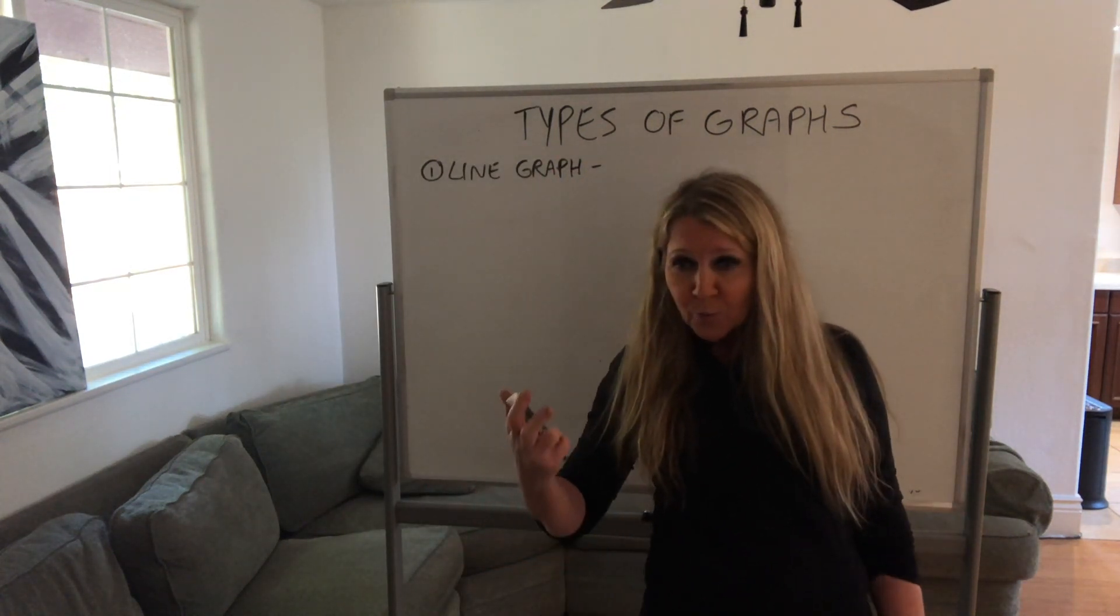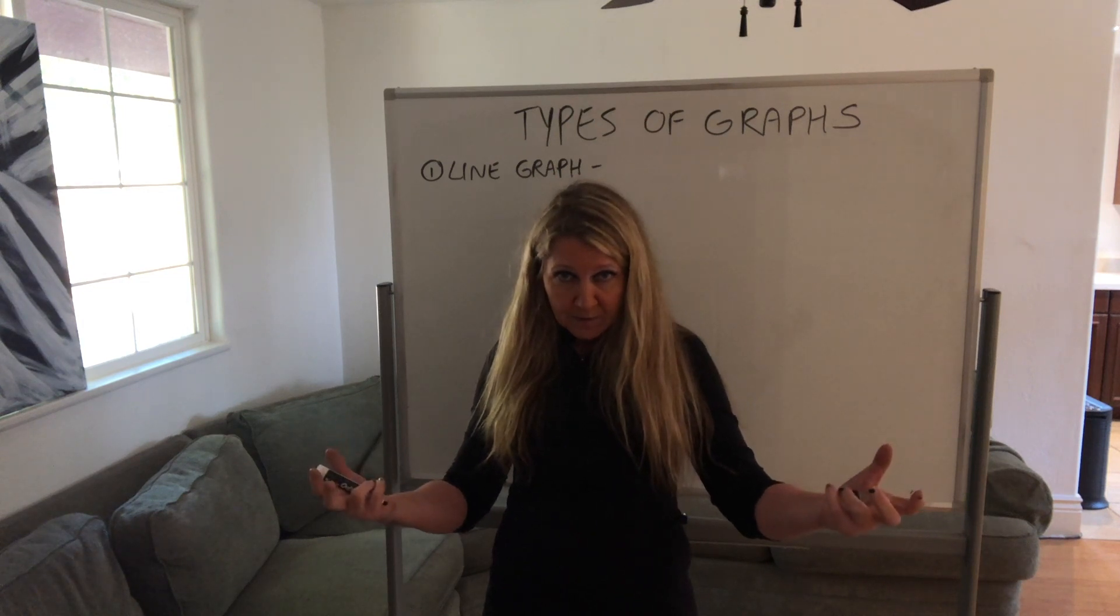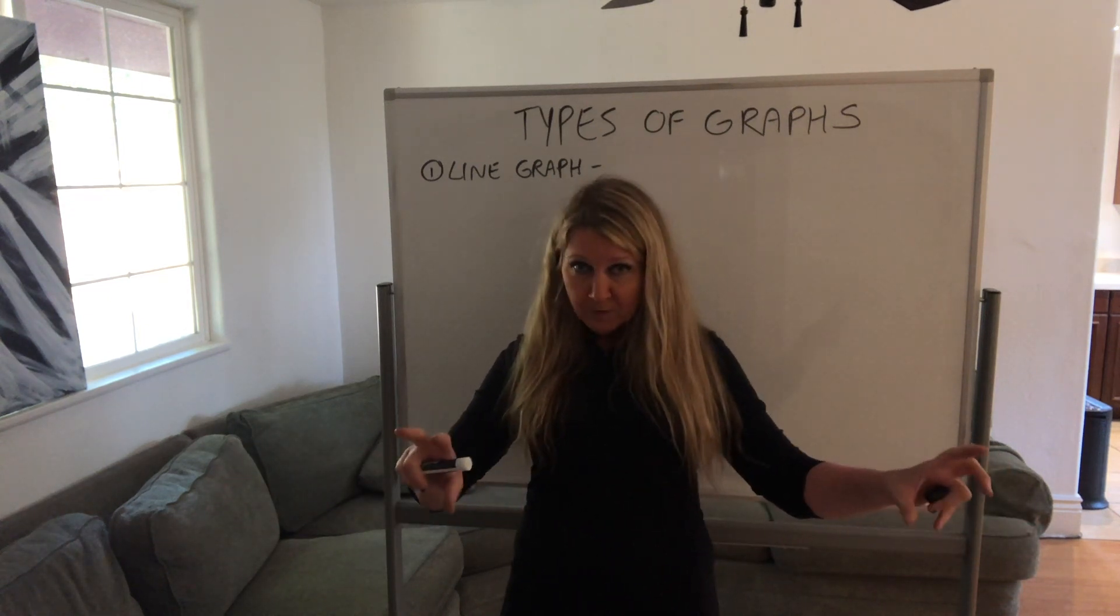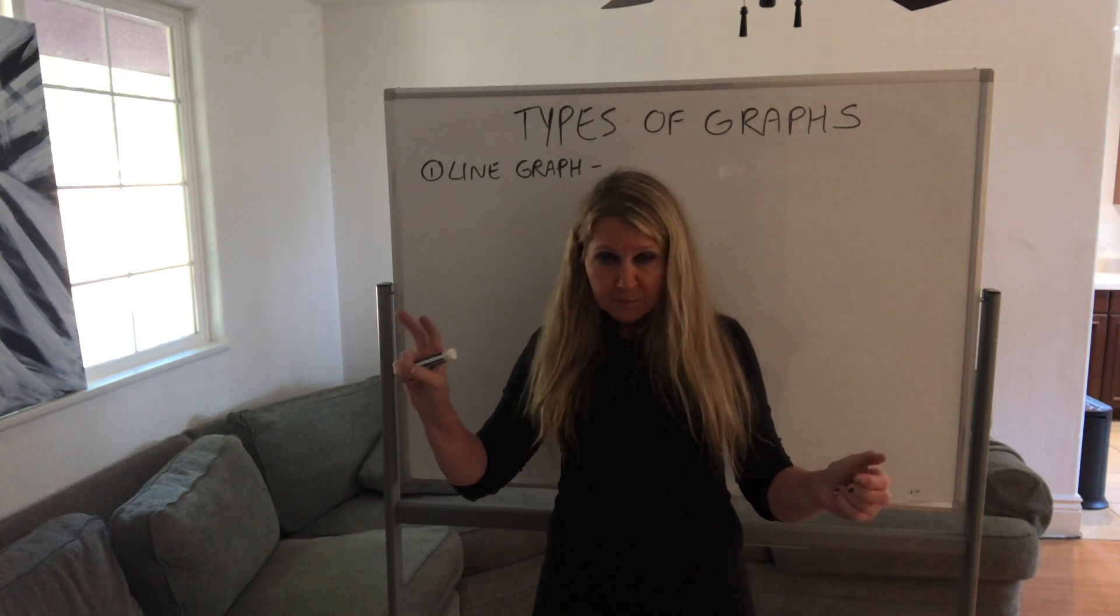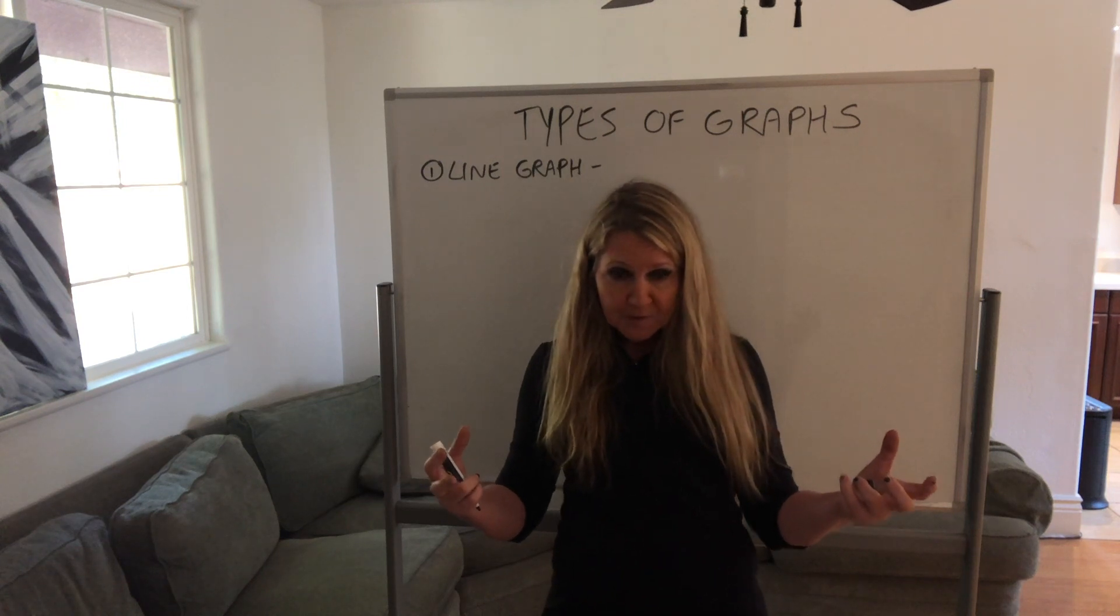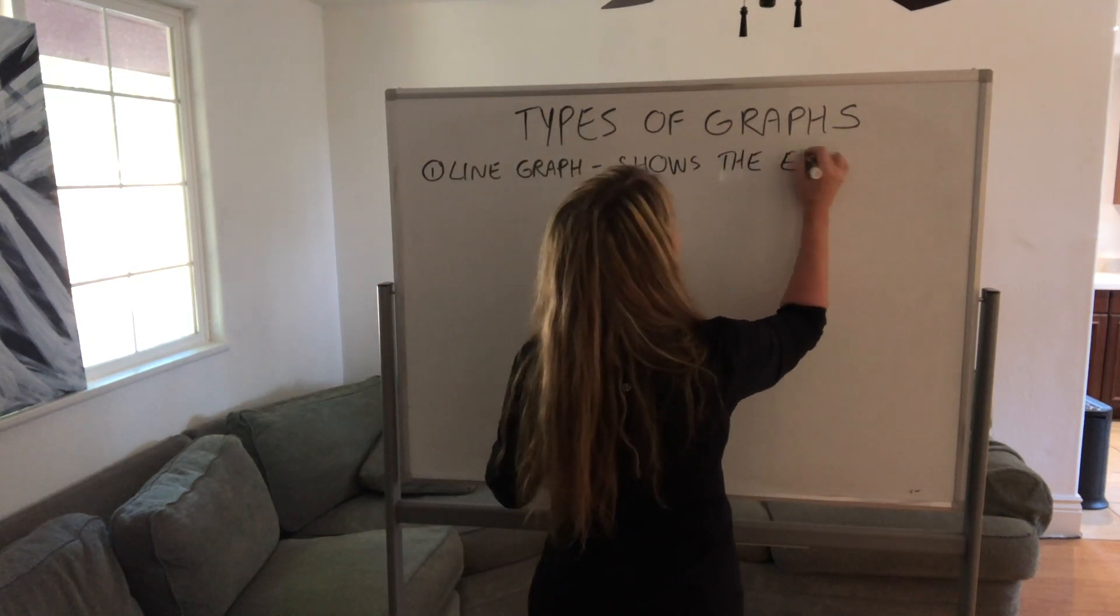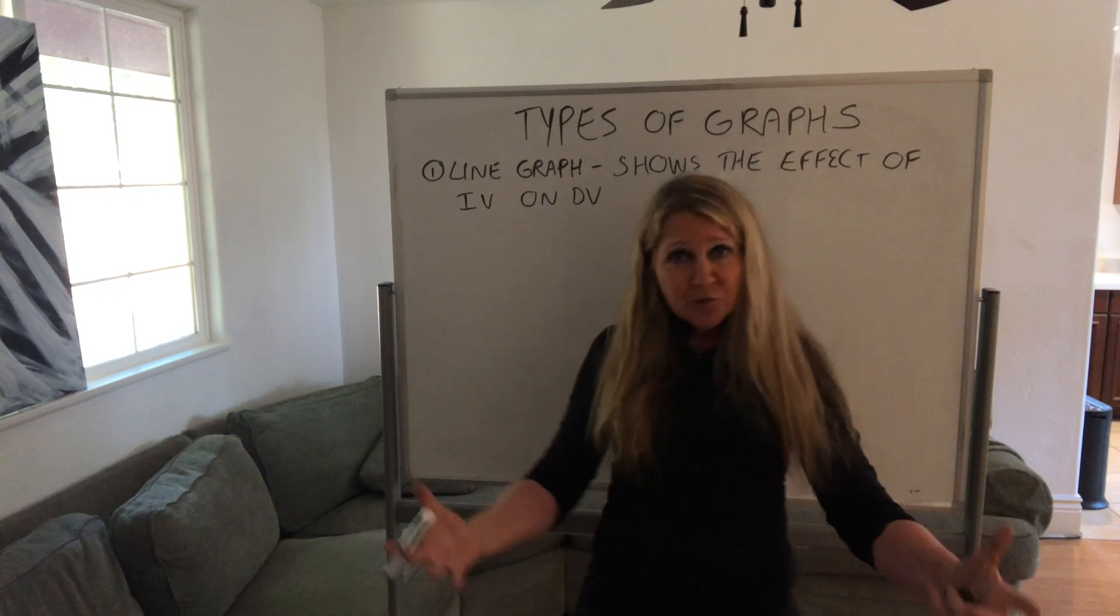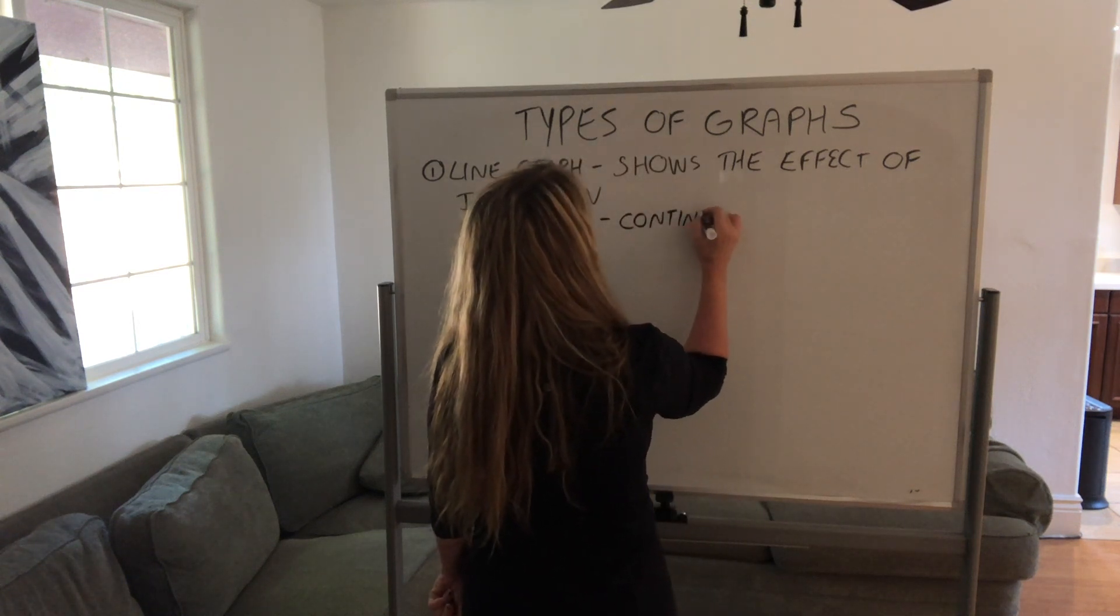A line graph is really used to show the effect the independent variable has on the dependent variable. And we use continuous data. So anything where it's happening over time, we use a line graph. If you want to see the change that happened over a certain amount of time, that would be a line graph you'd use for that. If you're looking for continuous change over time, we want to see if there's a change over time. We would use a line graph. So my graph shows the effect of IV on the dependent variable. And it really shows a continuous change. So we use it really to demonstrate continuous change.